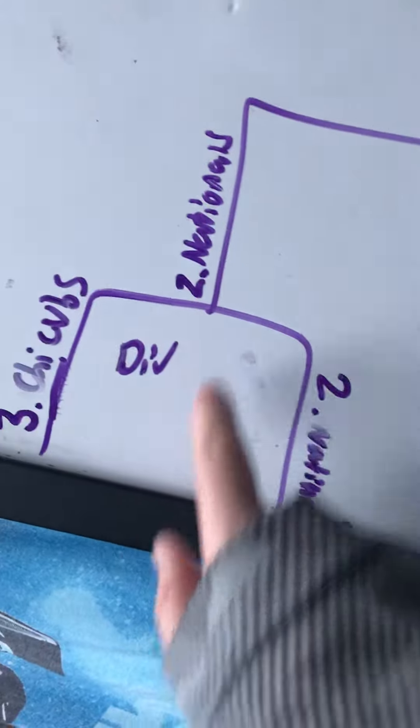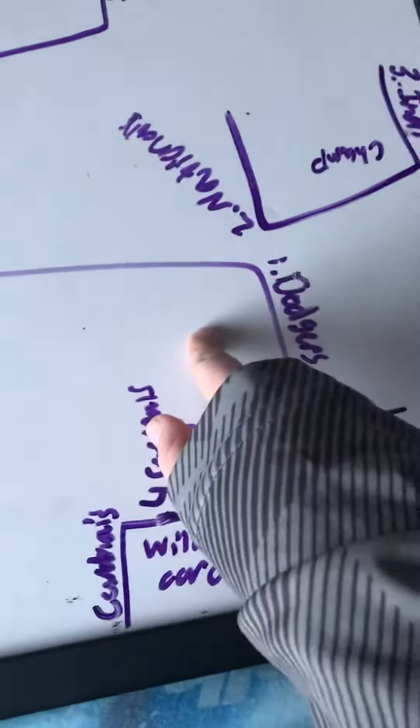Chicago versus Nationals, Nationals win. Nationals are going to beat the Dodgers. Nationals to the championship.